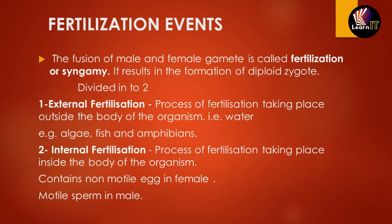In external fertilization, the fertilization process takes place outside the body of the organism — for example, in water. Examples include algae, fishes, and amphibians. In internal fertilization, the process takes place inside the body of the organism. The female egg is non-motile and remains inside the female body; due to the motility of the male sperm, internal fertilization occurs. An example is humans.